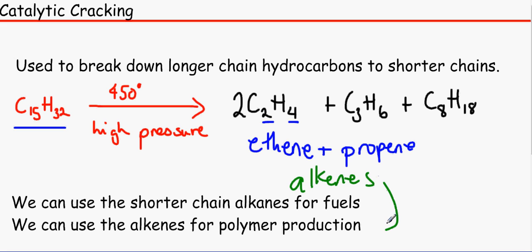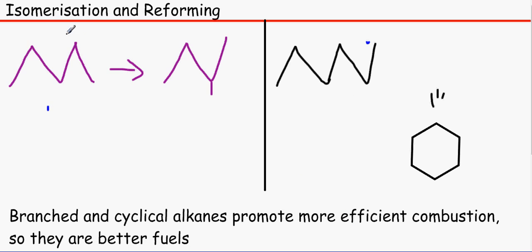We use it for polymer production when the bonds open up and attach to more alkenes to make polymers. It also makes a shorter chain alkane, which in this case is octane. As you can see by the general formula, this is CnH2n plus 2. We can use it for fuels as well, like airplane fuels and car fuels.